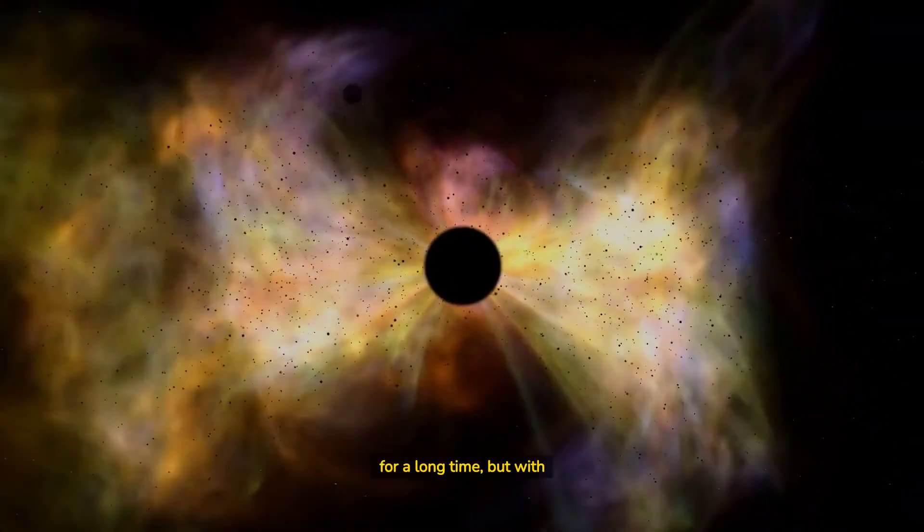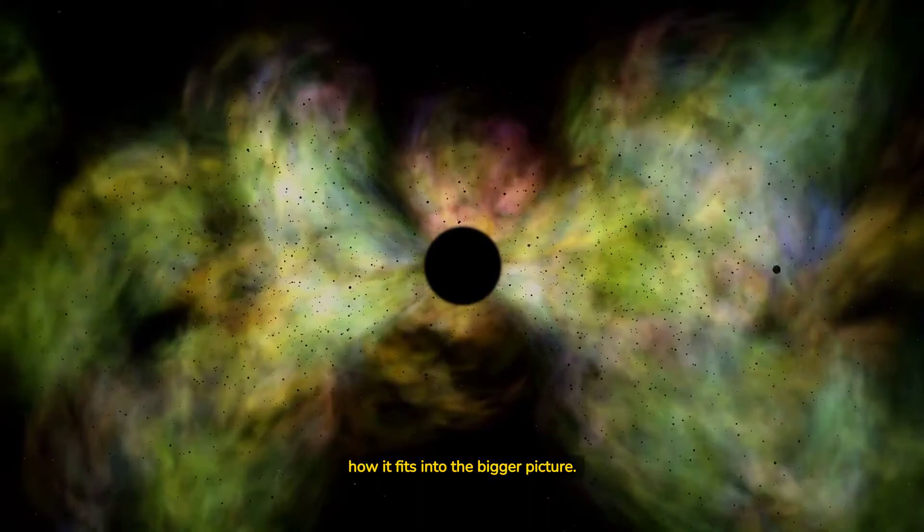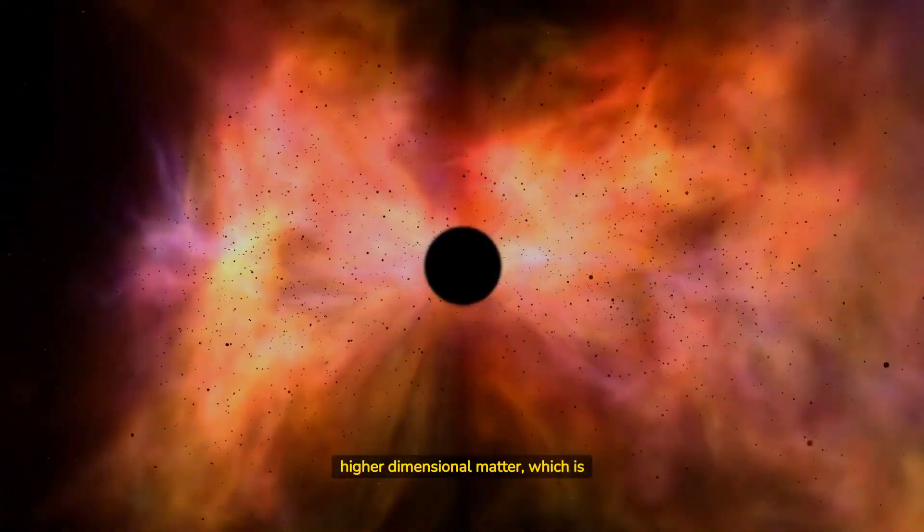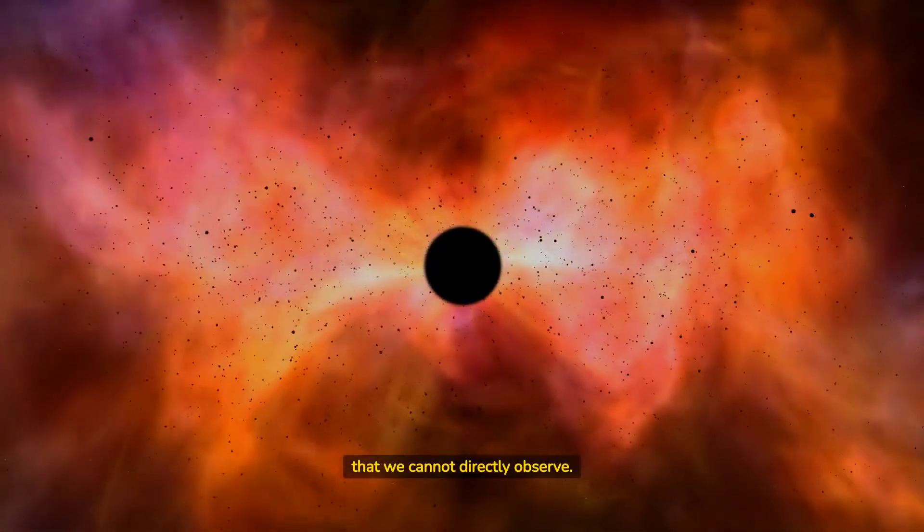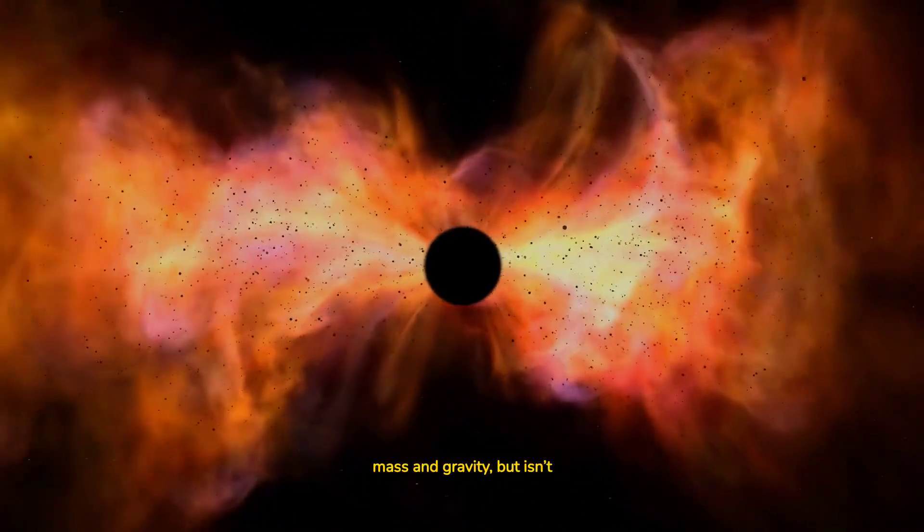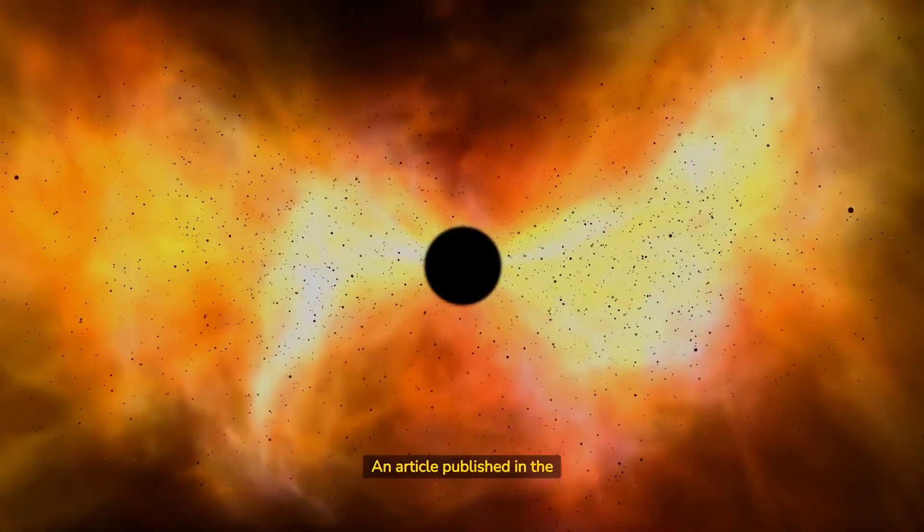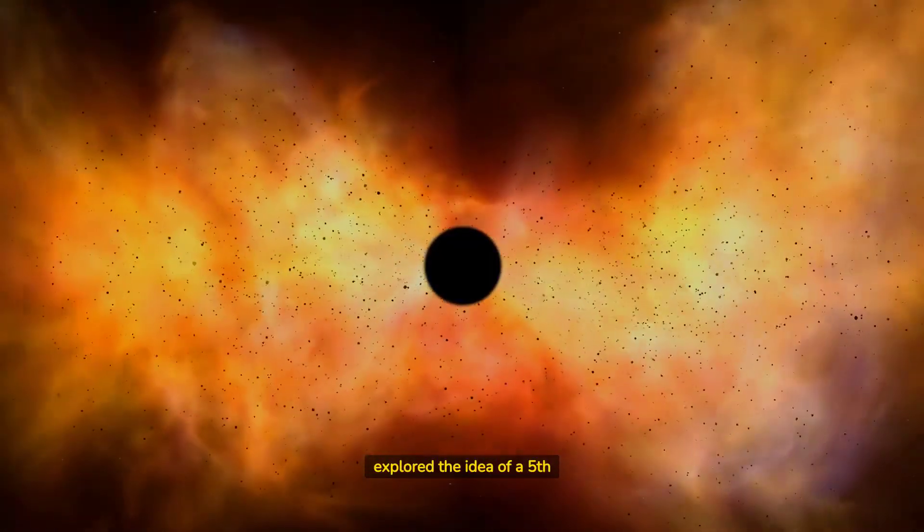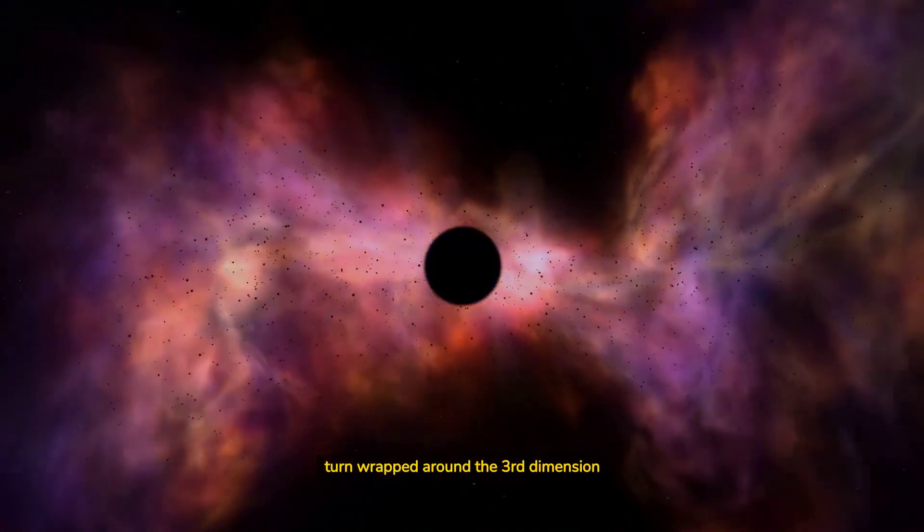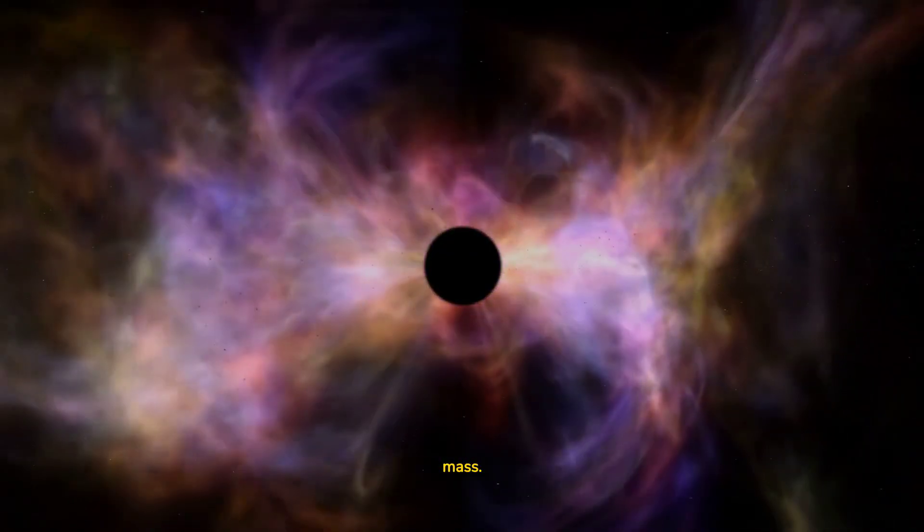Dark matter has been a mystery for a long time, but with this new understanding of higher dimensions, we can start to see how it fits into the bigger picture. The dark matter of the universe can be described by higher dimensional matter, which is interacting with our universe in ways that we cannot directly observe. It has similar properties to normal matter including mass and gravity, but isn't visible or detectable by our current technology or methods. An article published in the journal Physical Review Letters explored the idea of a fifth dimension that is wrapped around the fourth dimension, which is in turn wrapped around the third dimension. This theory could explain the mysterious dark matter that makes up much of the universe's mass.